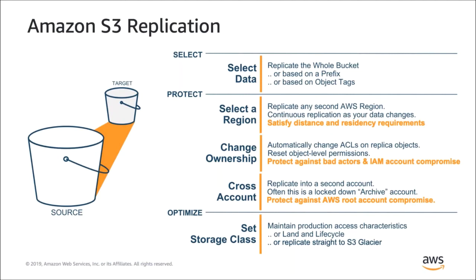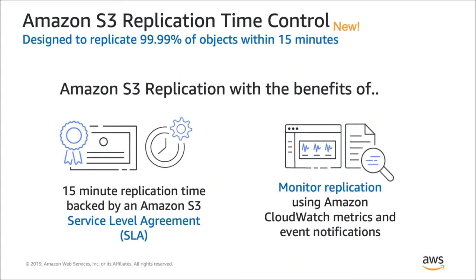Since launch in 2015, S3 customers have replicated trillions of objects and exabytes of data. And today, we're making this robust capability even more powerful with S3 Replication Time Control. We're pleased to announce that Amazon S3 Replication Time Control is now available in all AWS commercial regions. Customers are often interested in the time objects take to replicate to their destination. This time can be influenced by factors such as object size, count, and other attributes. When you need additional control and visibility over replication time, you can now use all of the capabilities of S3 Replication with a new 15-minute replication time service level agreement and a set of CloudWatch metrics and event notifications that are part of S3 Replication Time Control.